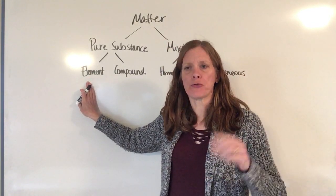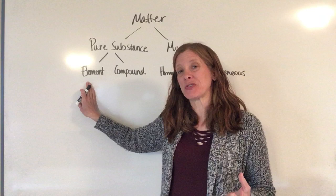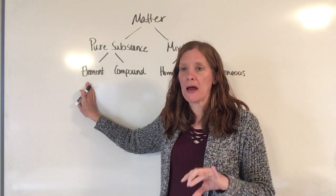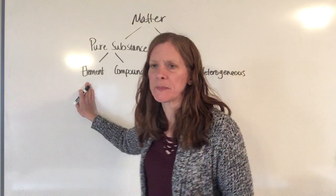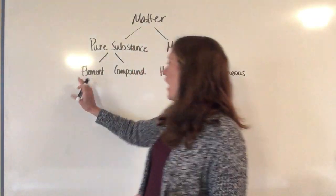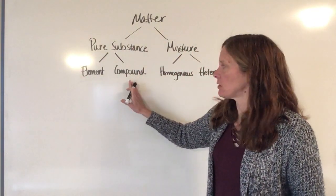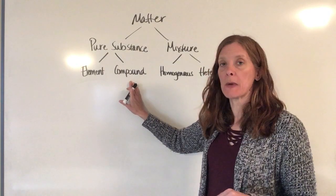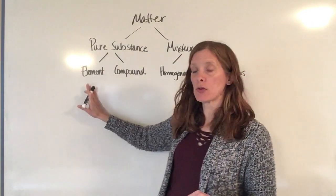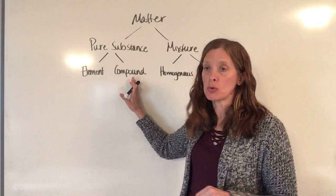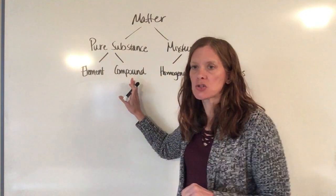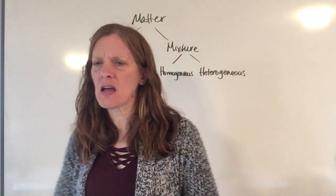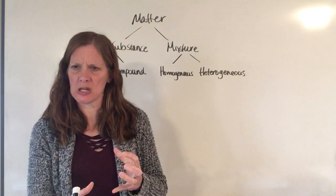We spent time in chapter four talking about the periodic table, which is how all of your atoms and elements are organized. Then in chapter five we started talking about compounds because we talked about bonding and how you take elements together and bond them into compounds. That was chapter five, and then we skipped chapter six.